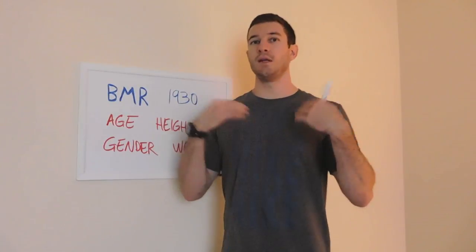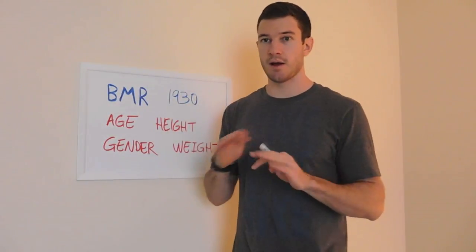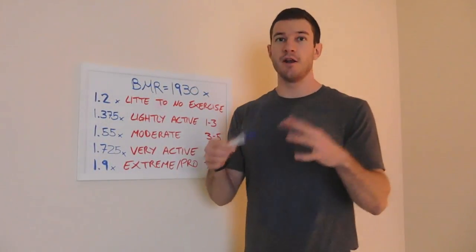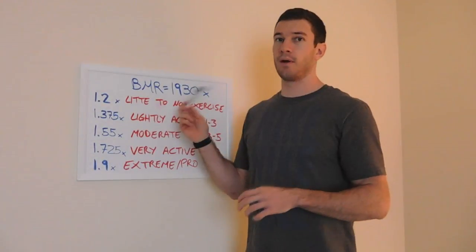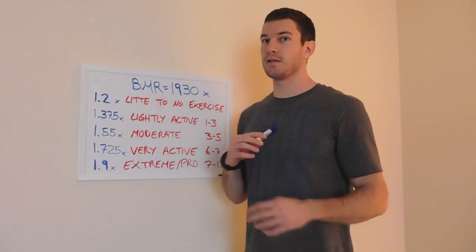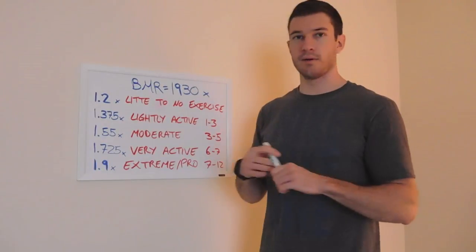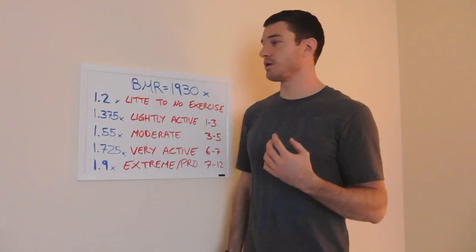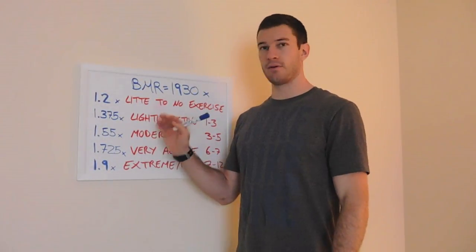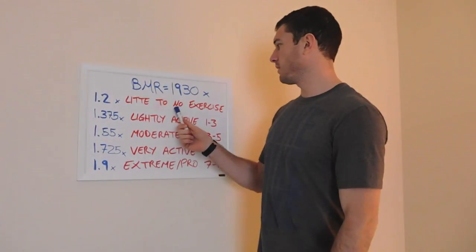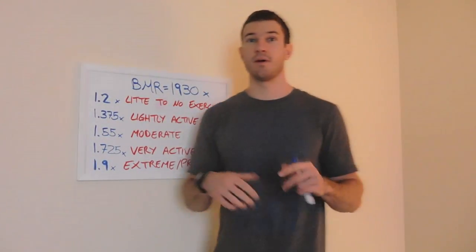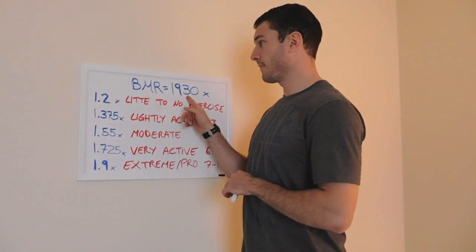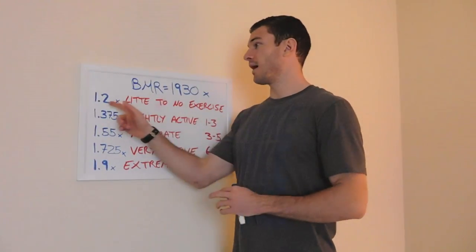Once you have this BMR number, we need to do another calculation to figure out your actual calorie needs. You're going to multiply your BMR by your activity level. There are five different activity levels. Number one is little to no exercise — if you're very sedentary and don't do much at all, you multiply your BMR by 1.2.